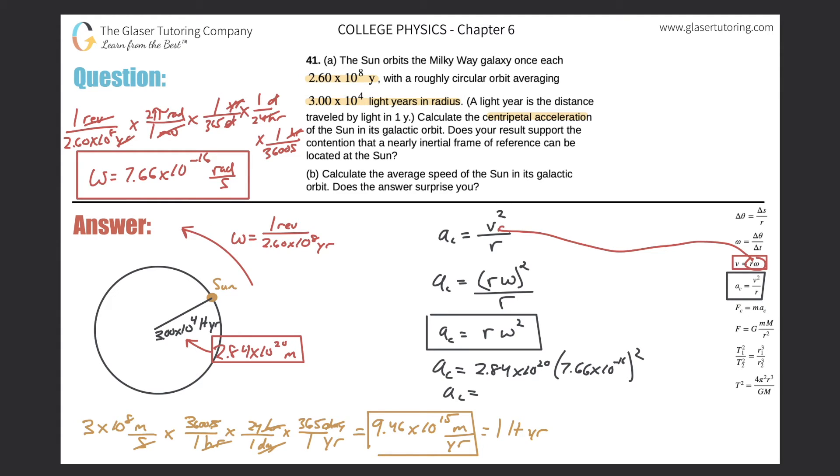And this works out to 1.67 times 10 to the negative 10, and that is now meters per second squared. That's the centripetal acceleration. So that takes care of letter A. It was easy, but just a whole lot of conversions.